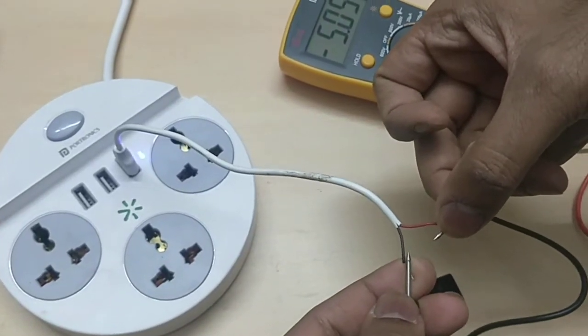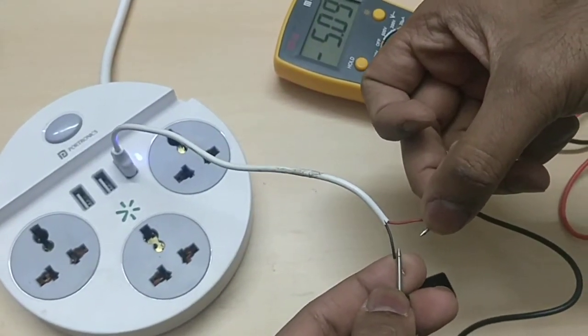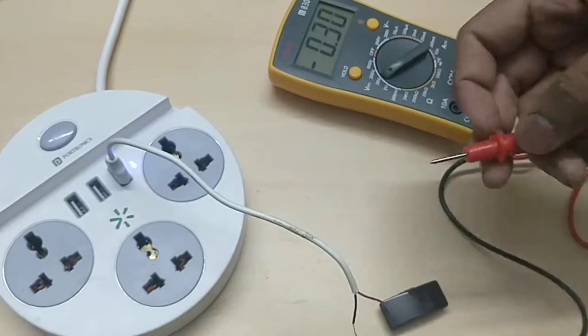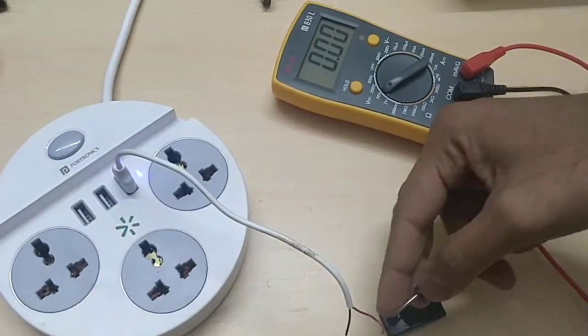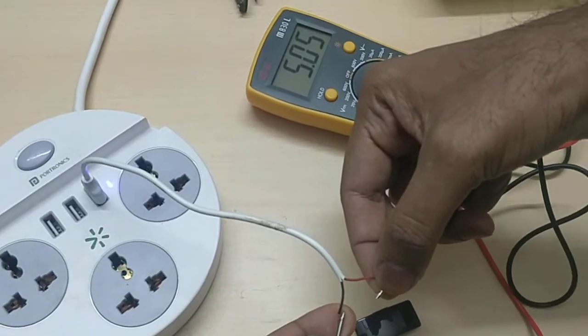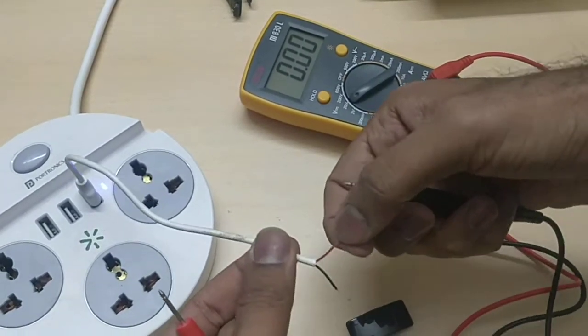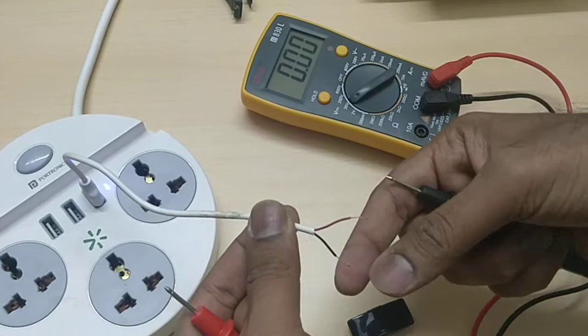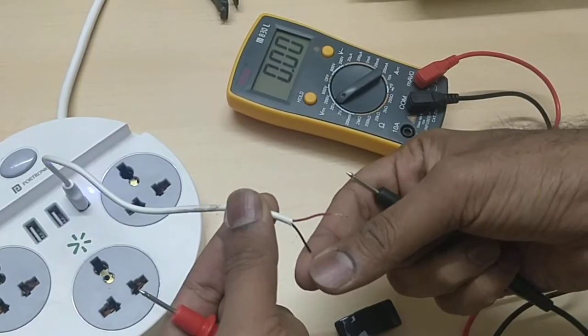As you can see, I'm getting a negative 5 volts which means the terminals are reversed. So if I reverse my terminals I'm getting my positive 5 volts, which means the red wire here is the ground and the black wire is the positive 5 volts.